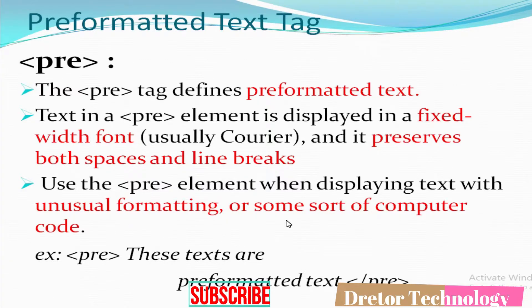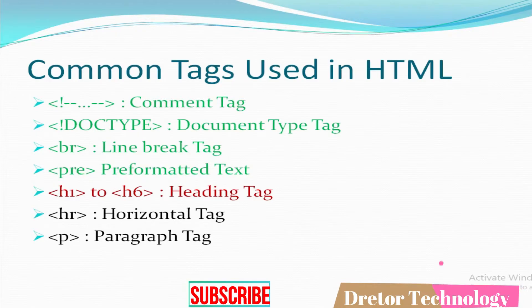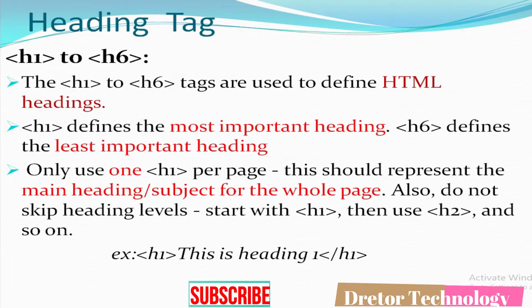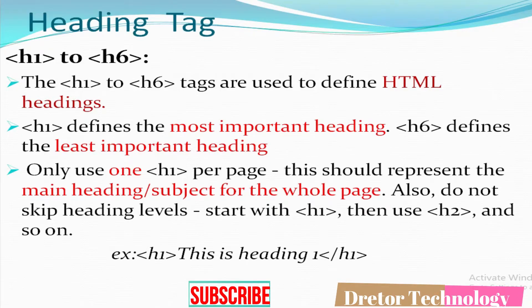The next tag is the heading tag, from H1 to H6. There are six types of headings. H1 through H6 tags are used to define HTML headings. H1 defines the most important heading and H6 the least important. Only use one H1 per page — it should represent the main heading of the page. You may use H2 through H6 multiple times. Also, do not skip heading levels; start with H1, then H2, then H3, and so on. It is a pair tag.